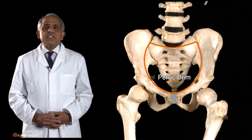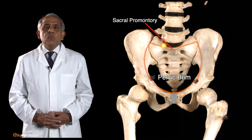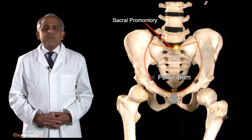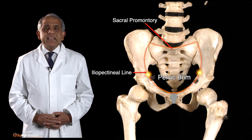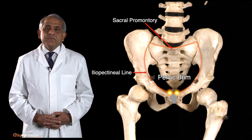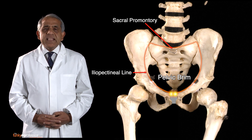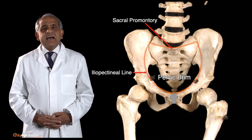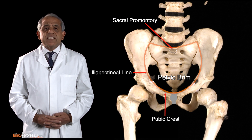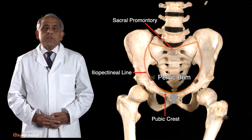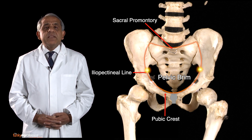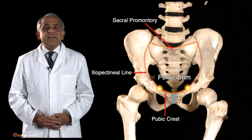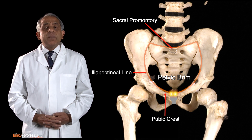Posteriorly, this ridge is made up of the sacral promontory, which is the anterior lip of the upper surface of the sacrum. On either side of the sacral promontory is the iliopectineal line on the inner surface of the hip bone. Traced anteriorly, the iliopectineal line becomes continuous with the pubic crest on the upper surface of the pubis of its side, and thus the two iliopectineal lines and the pubic crests meet anteriorly at the pubic symphysis, completing the pelvic brim.